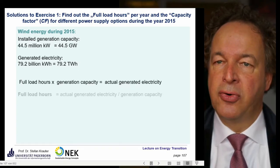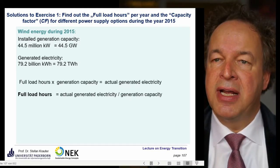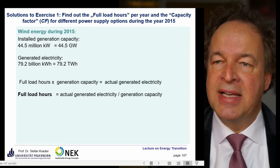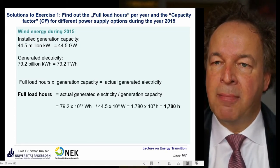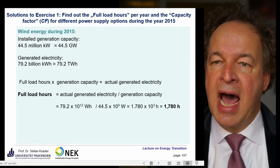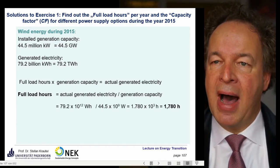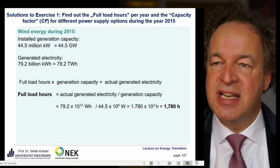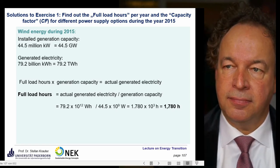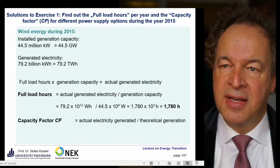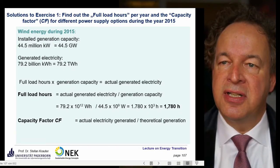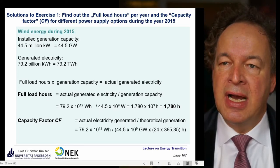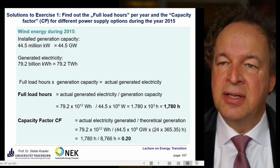So let's take a look at the full load hours. The full load hours is the generated electricity divided by the generation capacity. Putting in the numbers: 79.2 terawatt hours divided by 44.5 gigawatt gives us 1,780 hours. The capacity factor is the actual electricity generated divided by the theoretical generation, and putting in the numbers we find a capacity factor of 0.2.